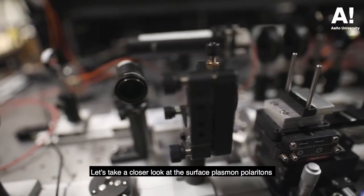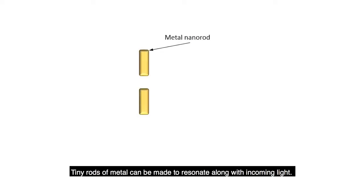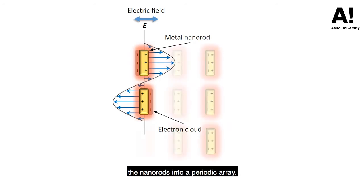Let's take a closer look at the surface plasmon polaritons. Tiny rods of metal can be made to resonate along with incoming light. This so-called surface plasmon resonance can be tailored by assembling the nano-rods into a periodic array.